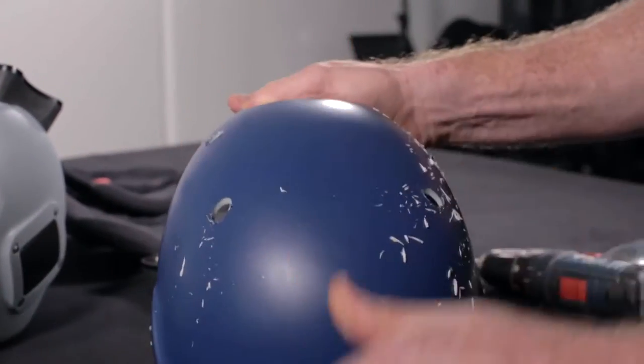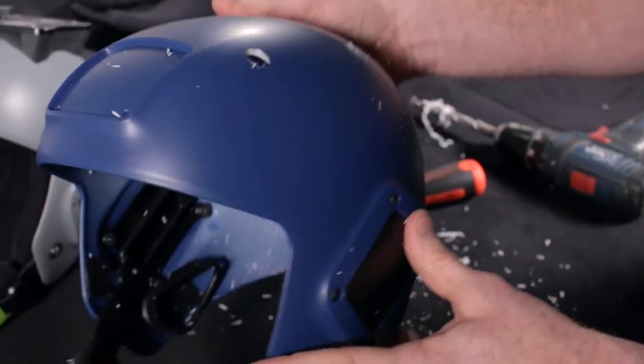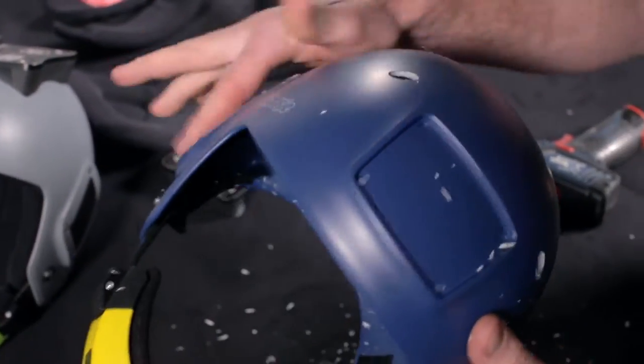So once you've got all four holes made, you can remove the drill jig, and you'll notice that you've got four reasonably tidy holes in your Fuel, and this should allow you to easily now add the Fuel top mount.